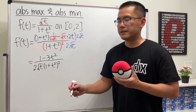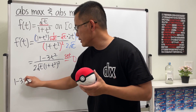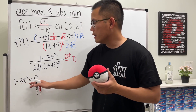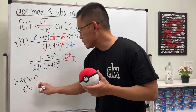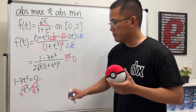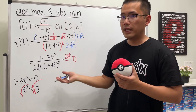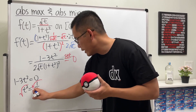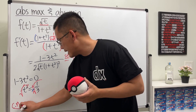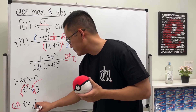Now we find where the derivative equals 0. Setting the top equal to 0: 1 minus 3t squared equals 0. Bringing 1 to the other side and dividing by negative 3, we get t squared equals 1 over 3. Taking the square root, we normally have plus or minus, but here we cannot have a negative number because we have square root of t — square root of a negative number is not real. So our critical number is t equals 1 over square root of 3.